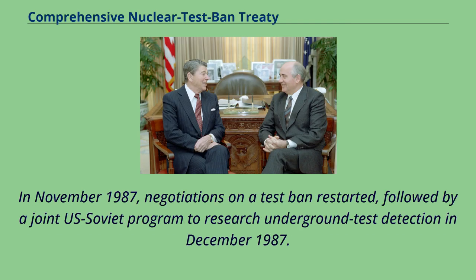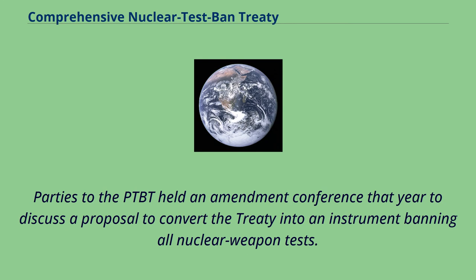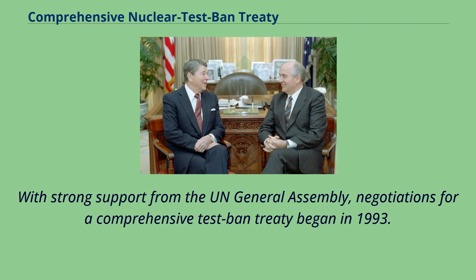In November 1987, negotiations on a test ban restarted, followed by a joint U.S.-Soviet program to research underground test detection in December 1987. Given the political situation prevailing in the subsequent decades, little progress was made in nuclear disarmament until the end of the Cold War in 1991. Parties to the PTBT held an amendment conference that year to discuss a proposal to convert the treaty into an instrument banning all nuclear weapon tests. With strong support from the U.N. General Assembly, negotiations for a comprehensive test ban treaty began in 1993.